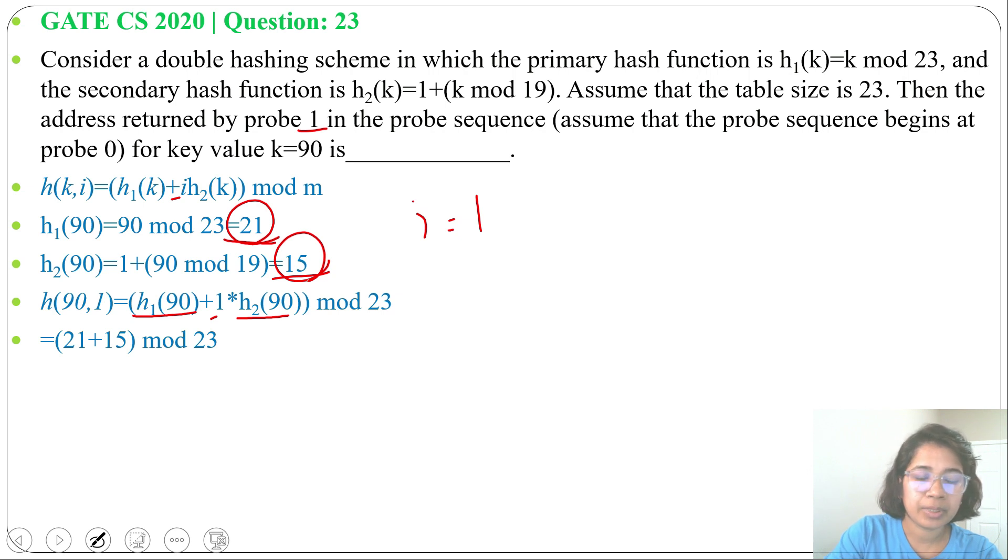So 21 + 1*15 mod 23. 21 + 15 is 36. So 36 mod 23 is 13. So for i = 1 in double hashing we are getting slot as 13. Answer will be 13.